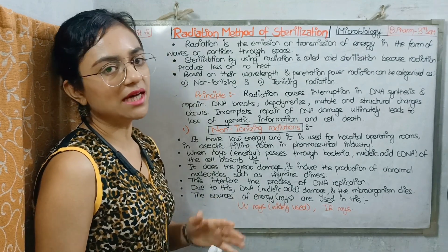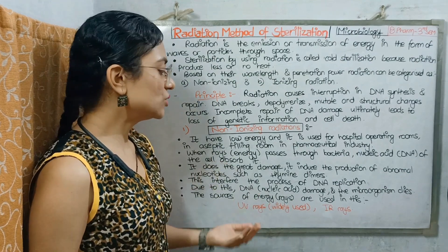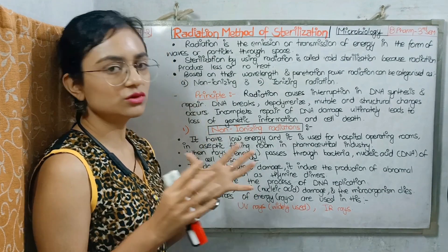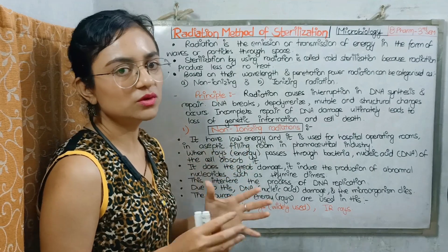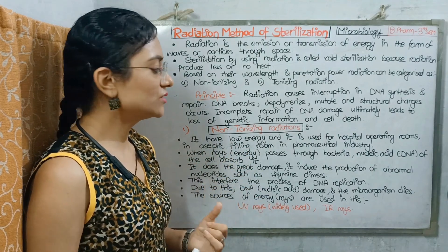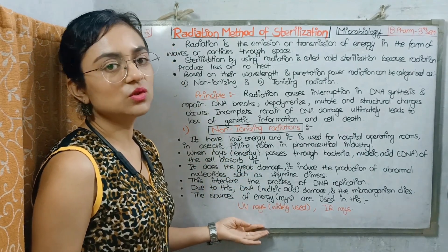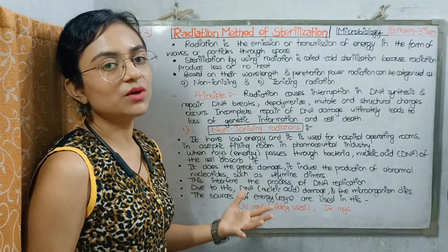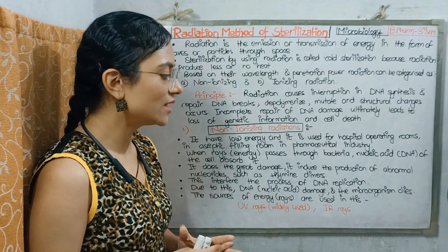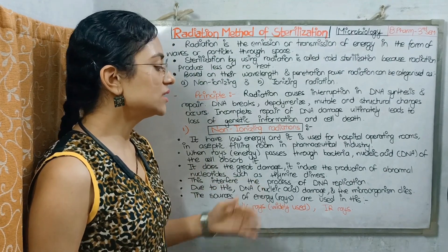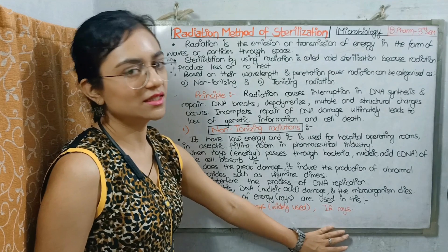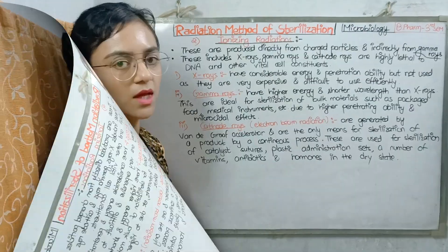The sources of non-ionizing radiation are two types of rays: ultraviolet rays, which is widely used, and infrared rays.